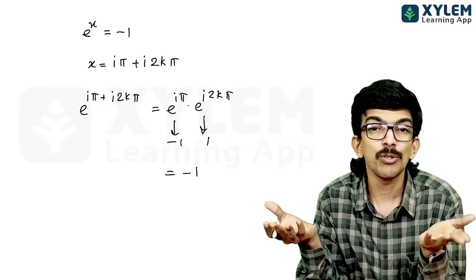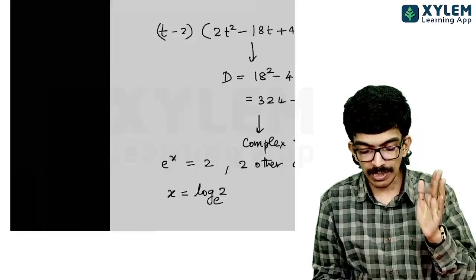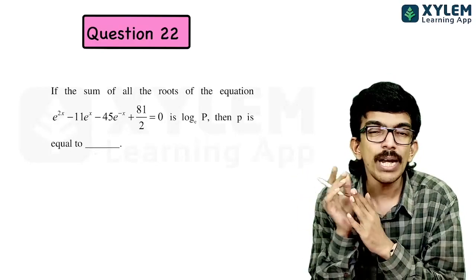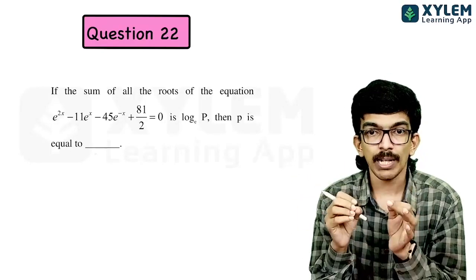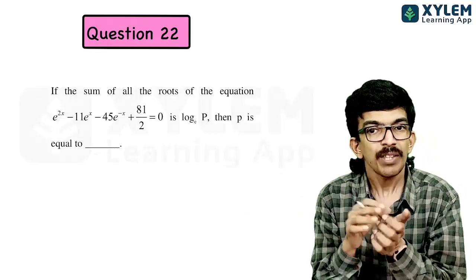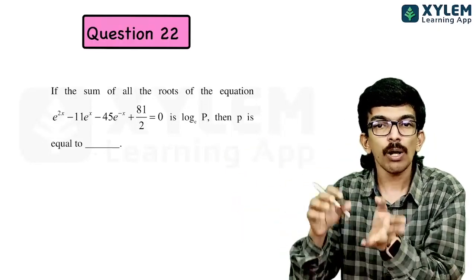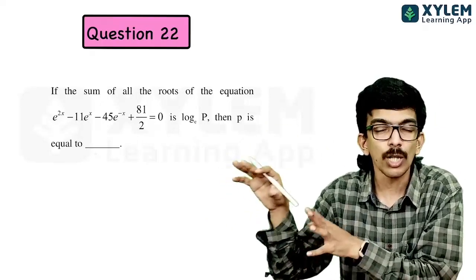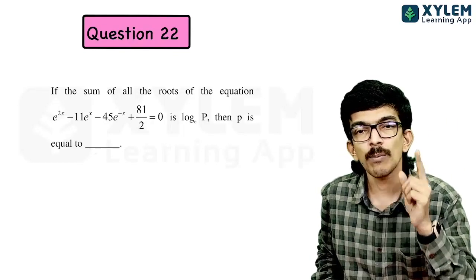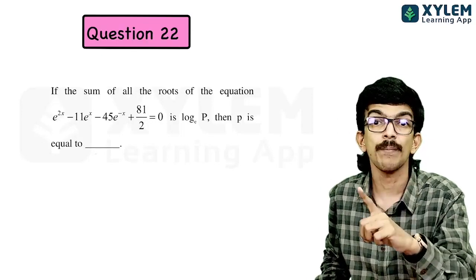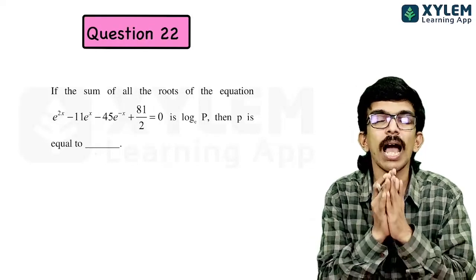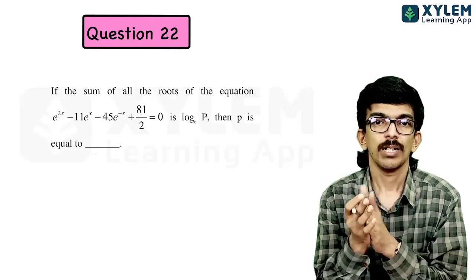If the question intended complex roots, the exponential equation would have infinitely many solutions and the sum would not converge. Clearly, only real roots were intended. There is only one value of e^x that is positive and real, giving one real solution x = ln 2. The actual correct answer is p = 2, not 45.